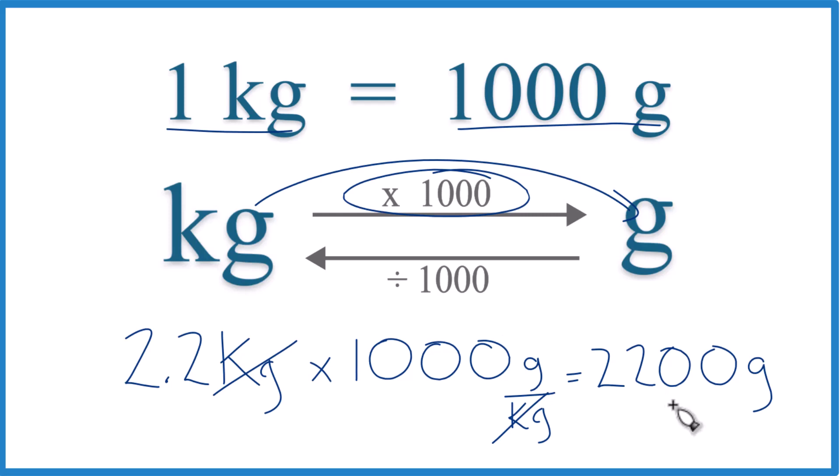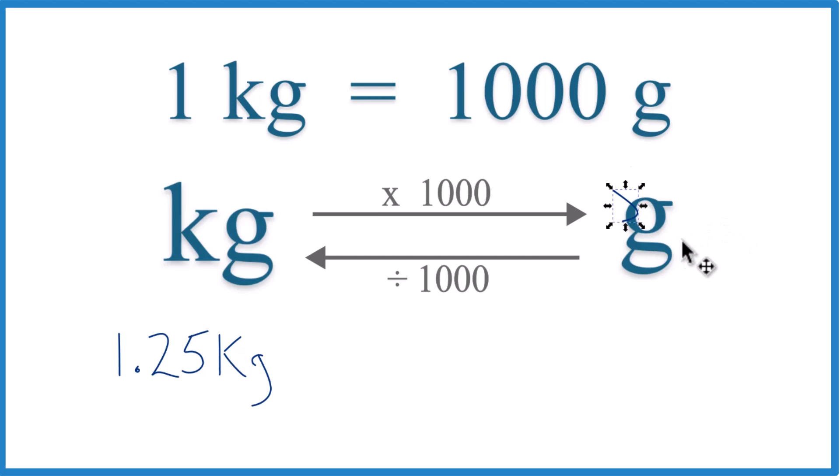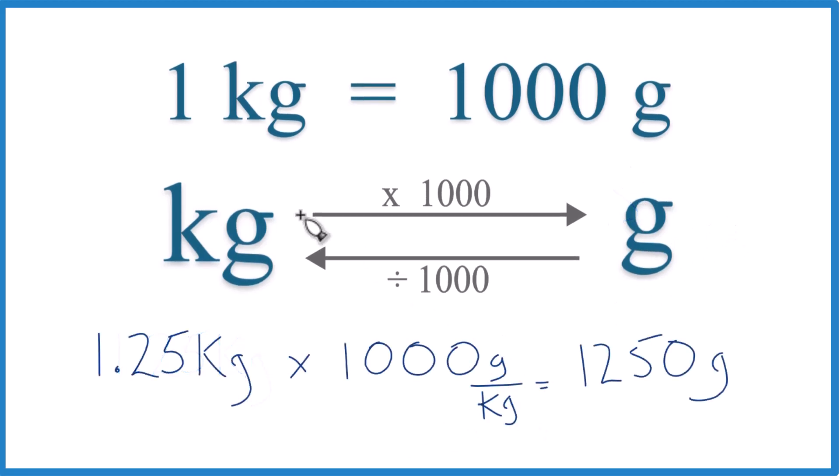All right. Pause and give this one a try. Convert 1.25 kilograms to grams. Kilograms to grams, multiply times a thousand. Remember, that's a thousand grams per kilogram. Kilograms cancel out. We're left with grams. That's what we're looking for. And we have 1,250 grams in 1.25 kilograms.